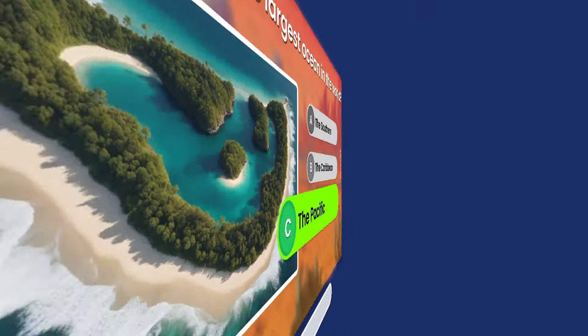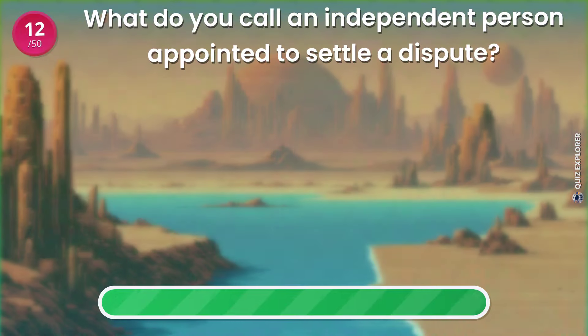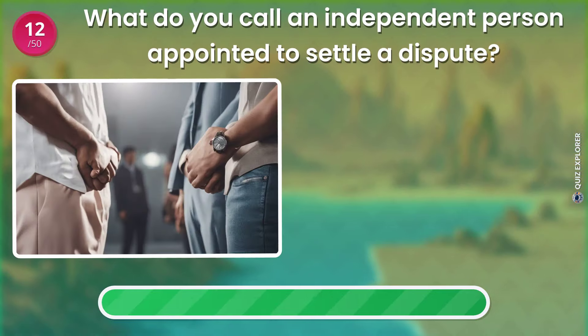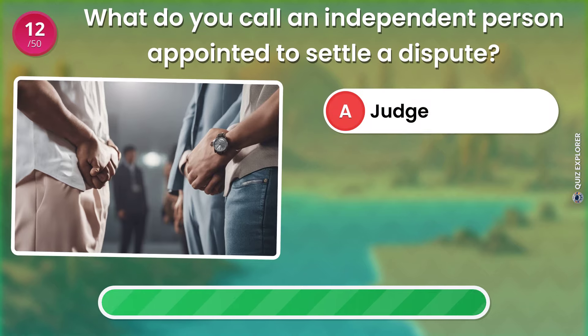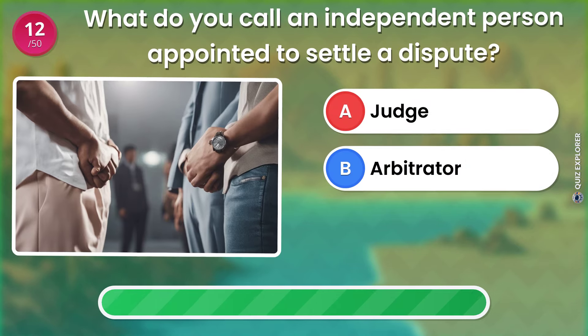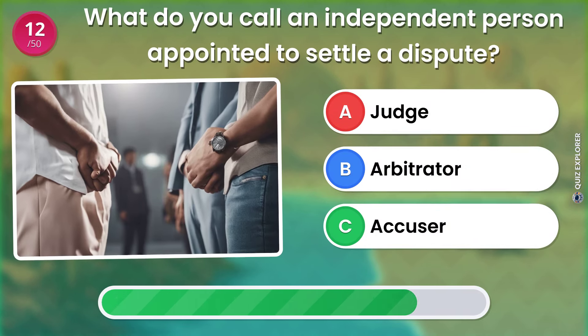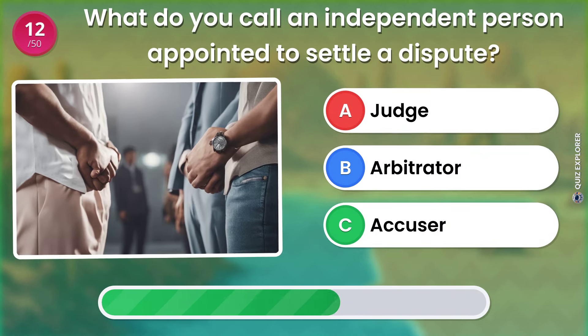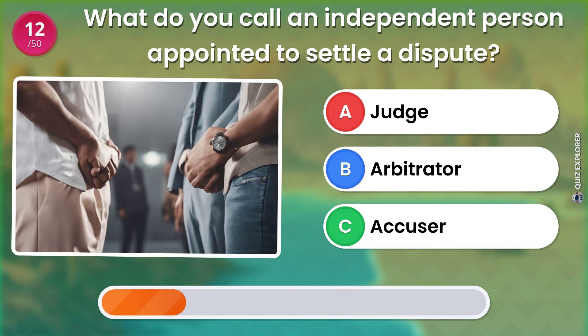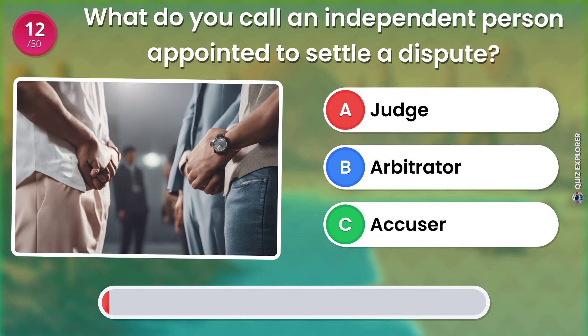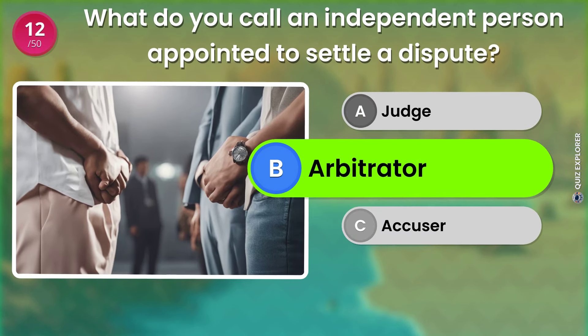What do you call an independent person appointed to settle a dispute? Judge. Arbitrator. Accuser. The answer is: Arbitrator.